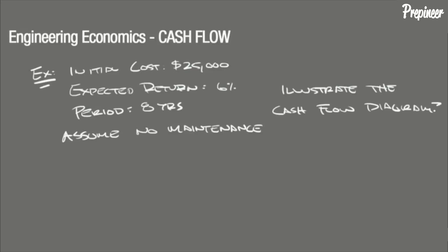Let's go through the solution. Our first step will be to determine the identity of each transaction. We can do this in its most simple form using a table — let's have one column be the year. We know the period is 8, so we have years 0, 1, 2, 3, all the way to 8.